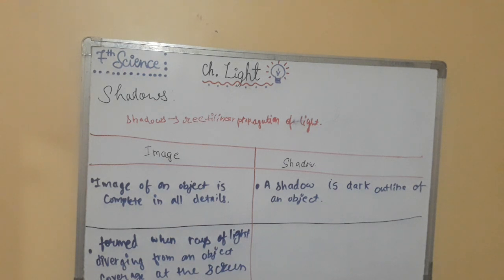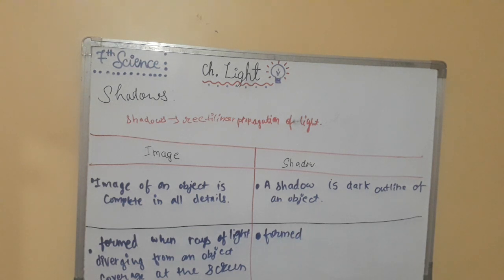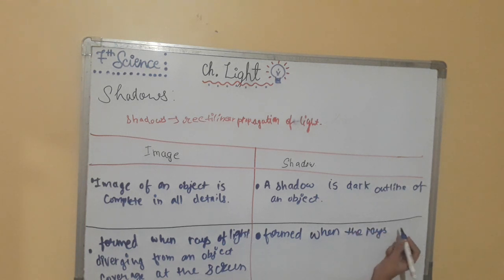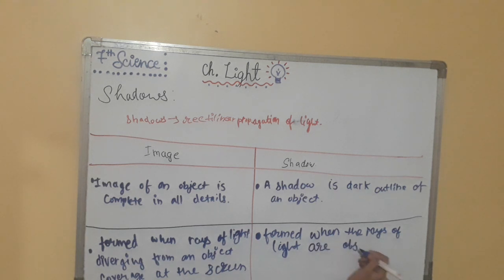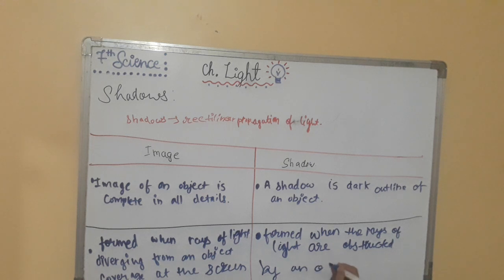The second point for shadow: a shadow is formed when the rays of light are obstructed by an opaque body.